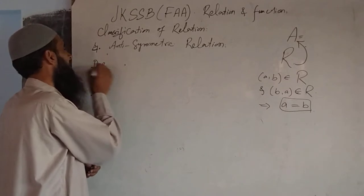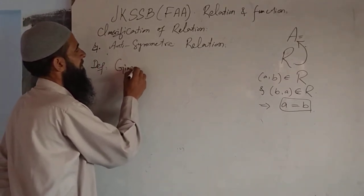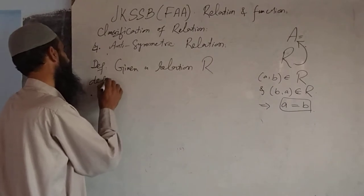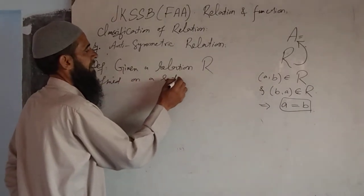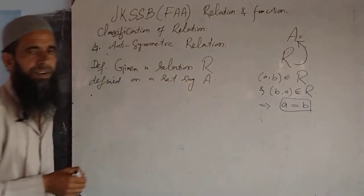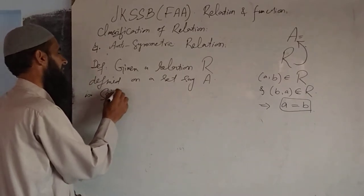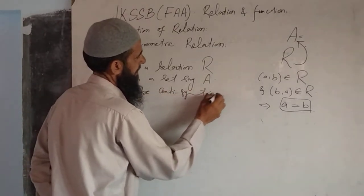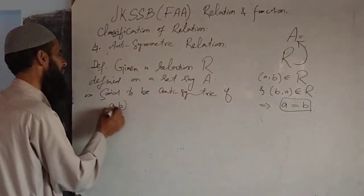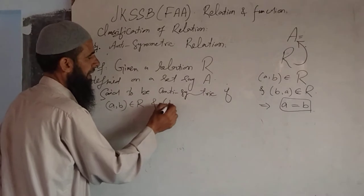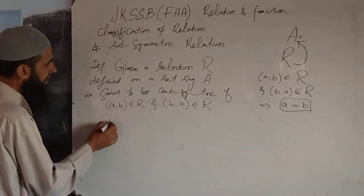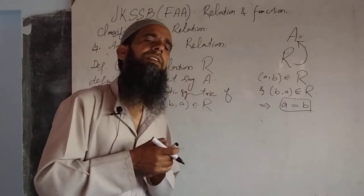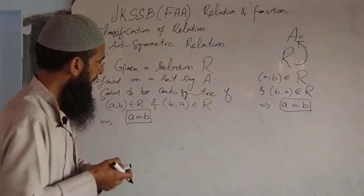The definition of this class of relation: a relation R defined on a set A is said to be anti-symmetric if (A, B) belongs to R and (B, A) belongs to R, and these two imply A is equal to B. When this condition holds in a relation, we say that relation is anti-symmetric.